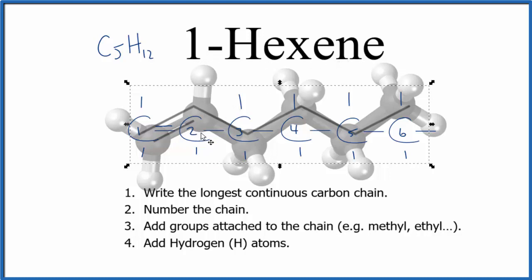Often with double bonds, we'll have isomers, geometric isomers, cis-trans isomers. But here, since the double bond is on the first carbon, we don't have those isomers with one hexene. This is Dr. B. Thanks for watching.